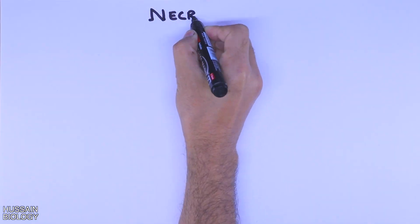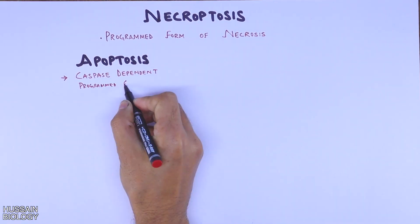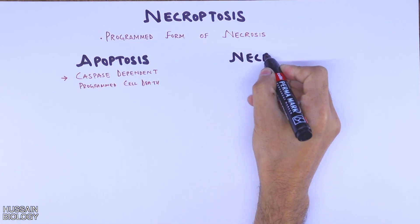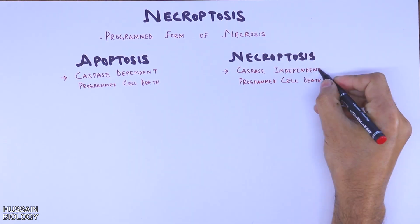In this video on cell signaling, we will discuss necroptosis - the signaling pathway which leads to cell execution through tumor necrosis factor. Necroptosis is a programmed form of necrosis. Just like apoptosis is caspase-dependent programmed cell death, necroptosis is caspase-independent programmed cell death.